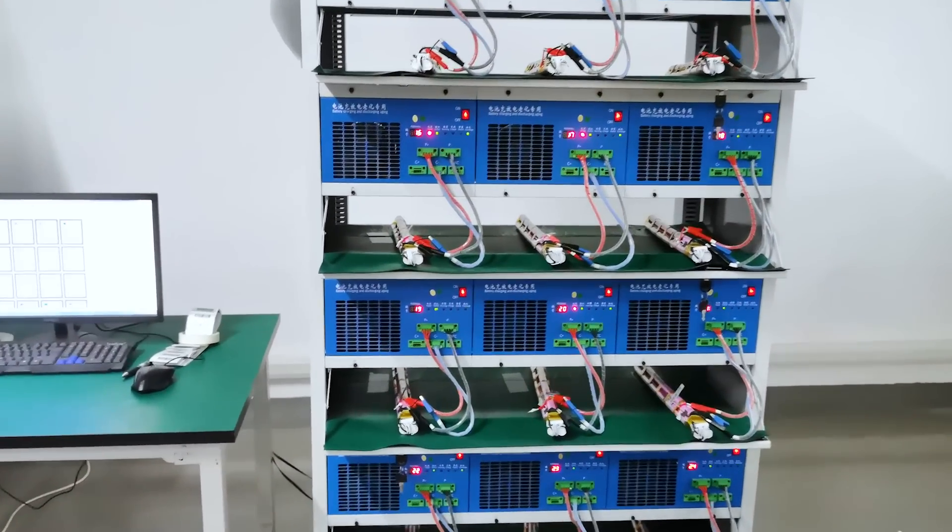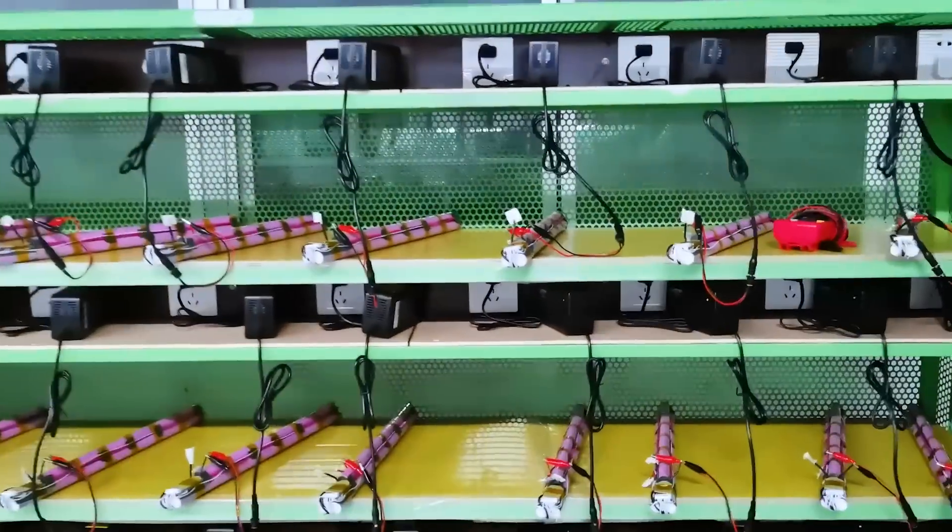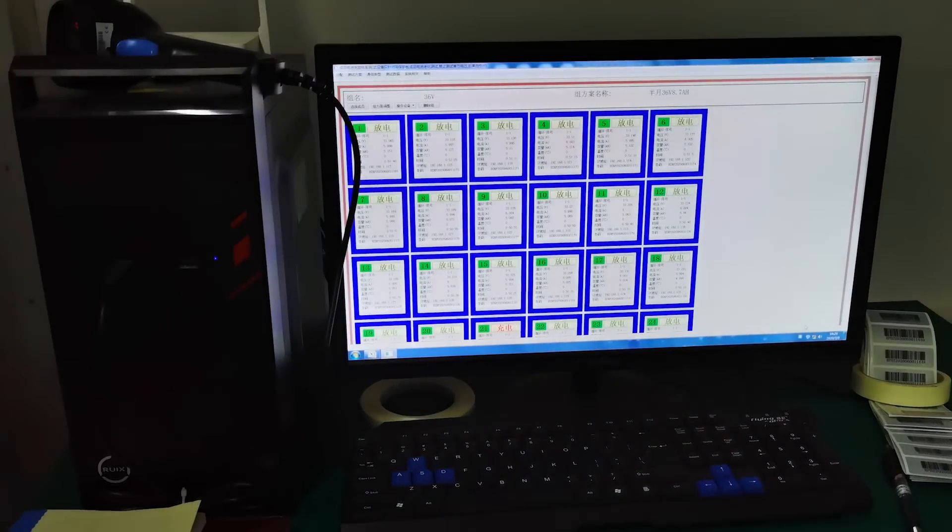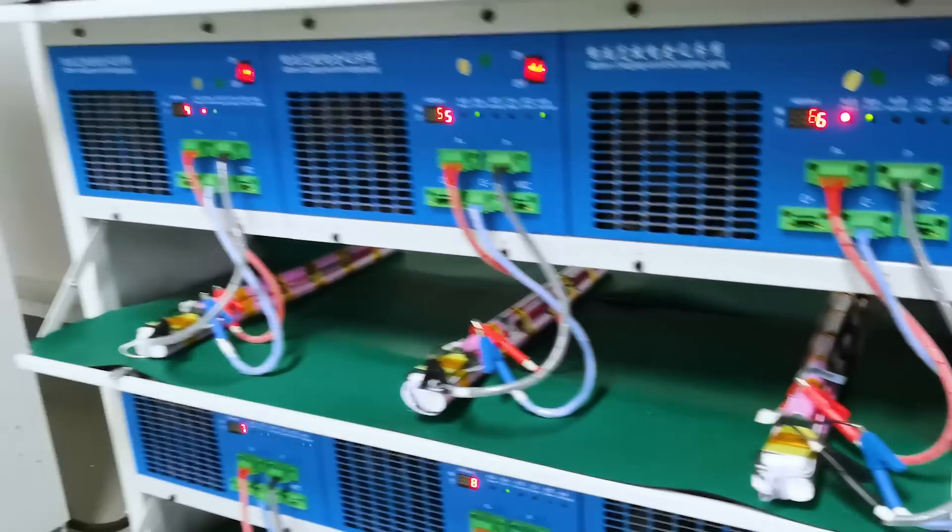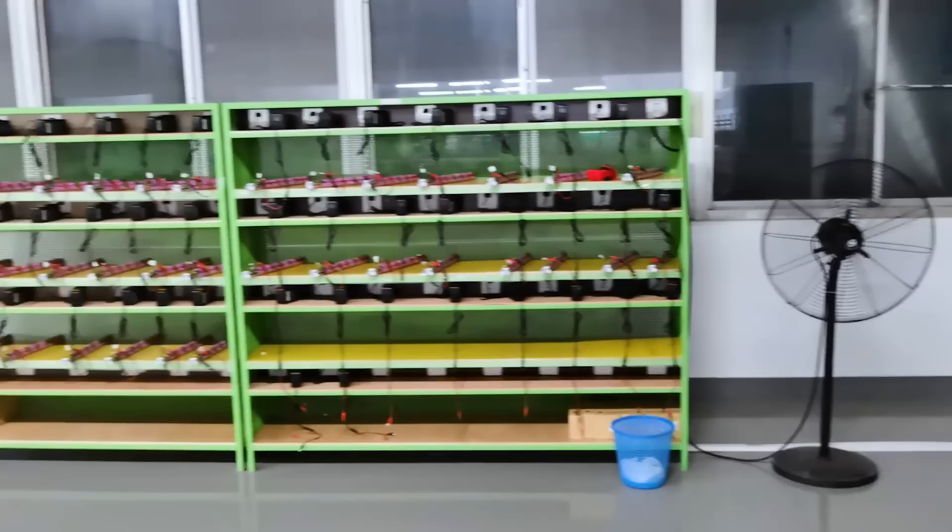We're going to charge them up all the way and then discharge them, and then charge them up and discharge them to 50 percent, which is the recommended voltage for shipping. Here on the computer we can see the actual testing data of each battery. You've got the serial number of the battery cell, the number of the testing unit it's in, the amperage it's charging at, and the voltage of the battery.